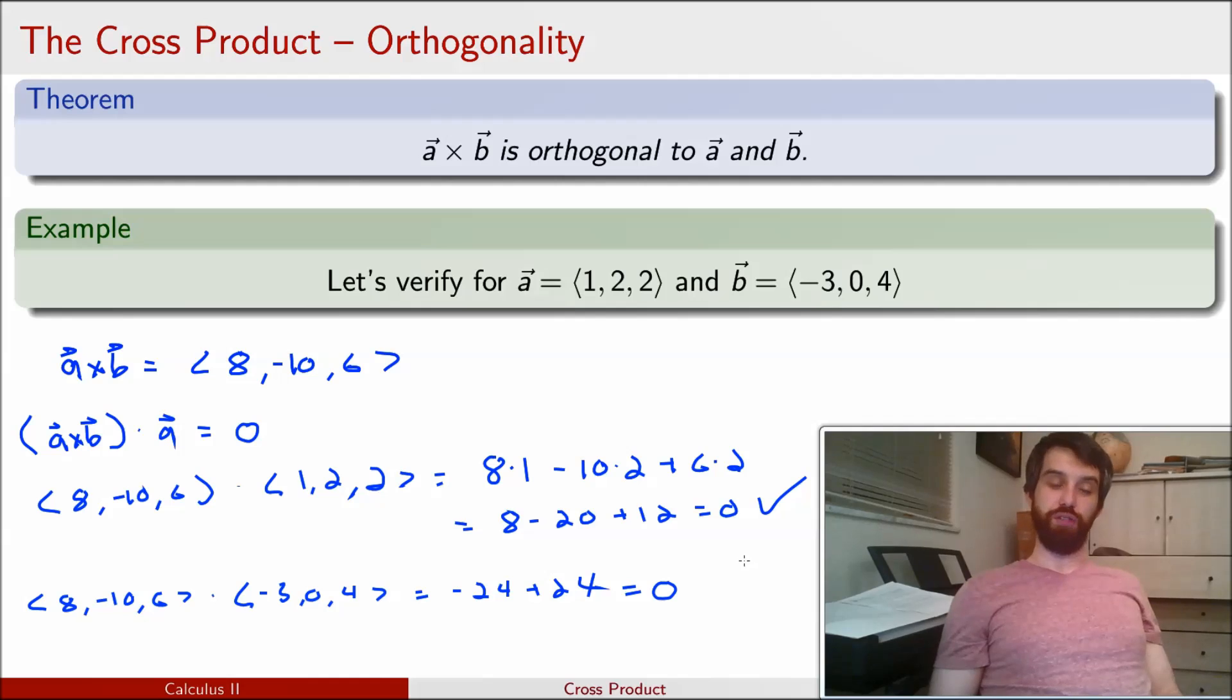So indeed the dot product of the cross product with the vector b is additionally equal to 0. And my theorem appears to be true in this particular case.